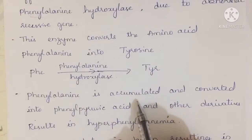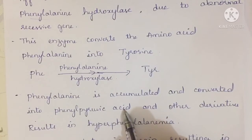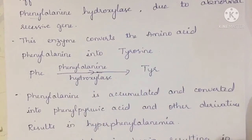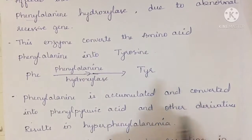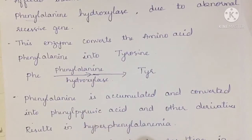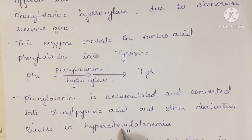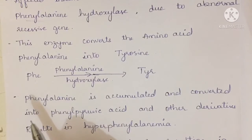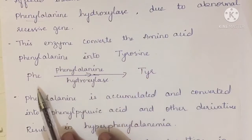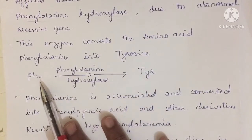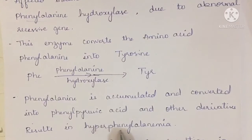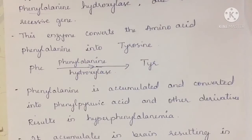Since phenylalanine is not converted to tyrosine, it gets accumulated and is instead converted into phenylpyruvic acid and some other derivatives. This results in hyperphenylalaninemia — 'hyper' meaning high, so phenylalanine is present in a large quantity in the patient's body. It is not converted into its product, so it accumulates and is converted into phenylpyruvic acid and other derivatives, increasing its quantity in the body.